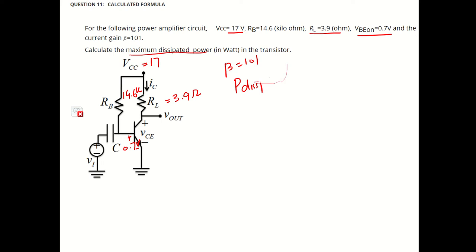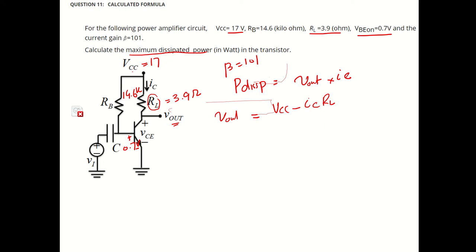So, maximum dissipated power is basically Vout times IC. In this case, we need to find Vout and IC. The formula for Vout will be VCC minus the voltage drop across this resistor, which is IC times RL. So Vout is VCC minus IC times RL — that is 17 minus IC times 3.9. To get Vout, we need IC.